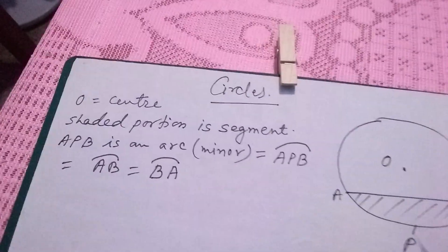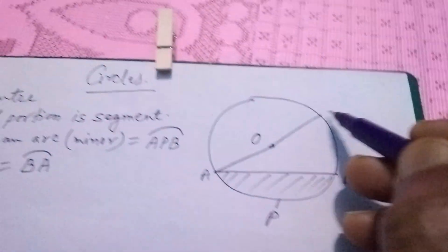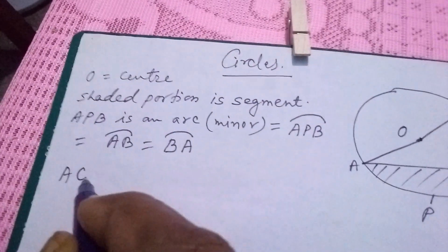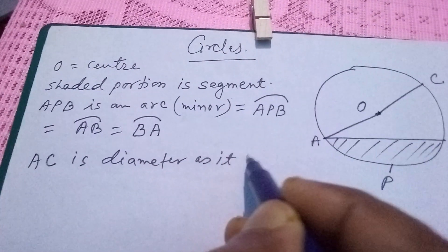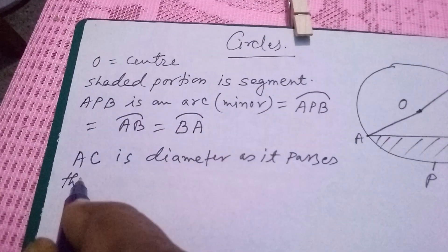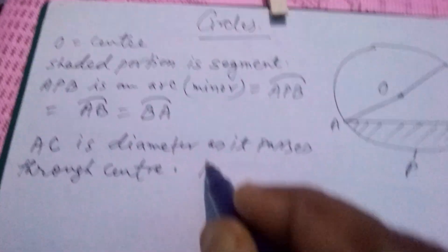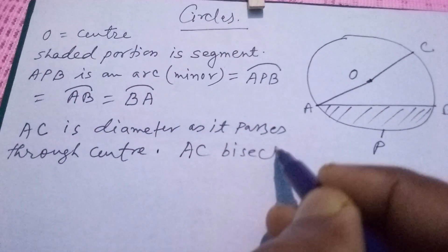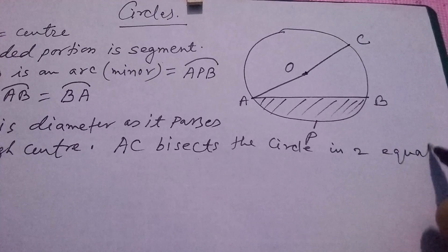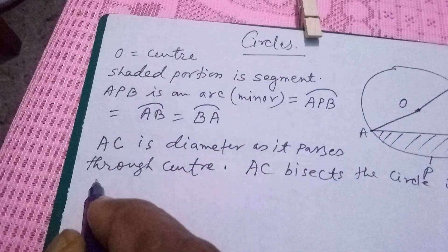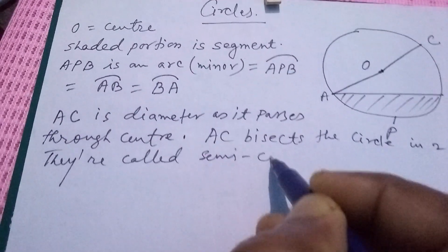Now the line passing through the center, this is C. Here AC is diameter as it passes through center. So, AC bisects the circle into equal parts, and they are called semi-circles.